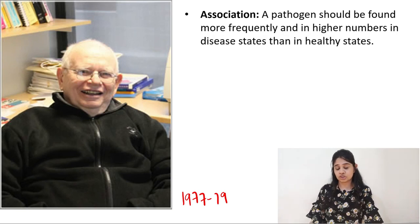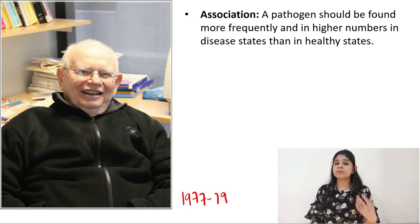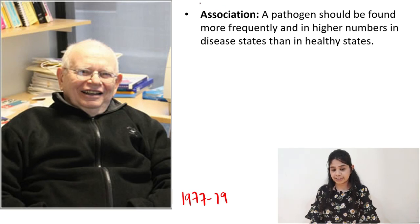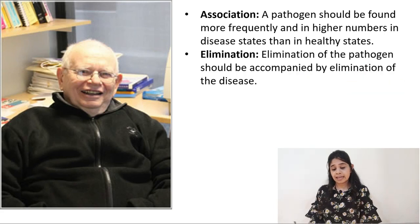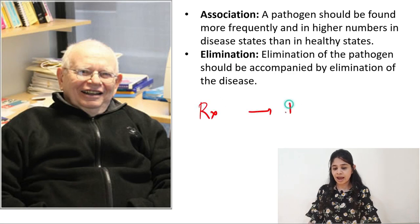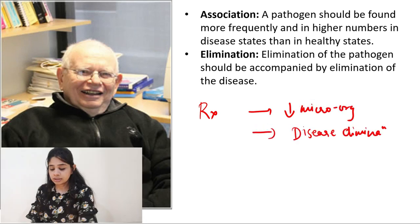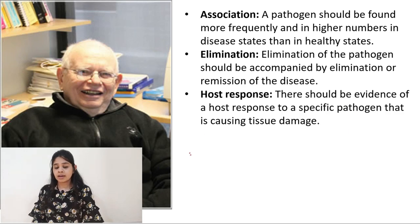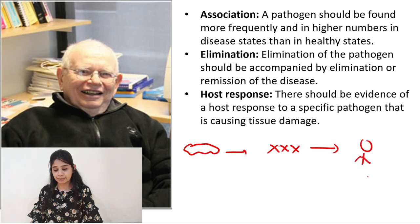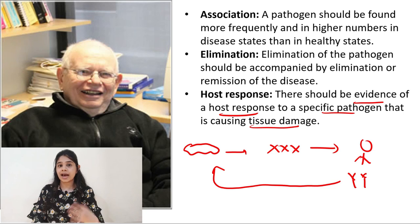The first postulate is association: the pathogen has to be found in increased frequency or increased number in the disease state, meaning increased amounts of periodontal pathogens are present when periodontal disease exists. The second postulate is elimination: treatment will reduce both the number of microorganisms as well as cause disease elimination. The third postulate is host response: the microorganism will cause certain tissue destruction and further elicit the host to release certain antibodies against that specific microorganism.